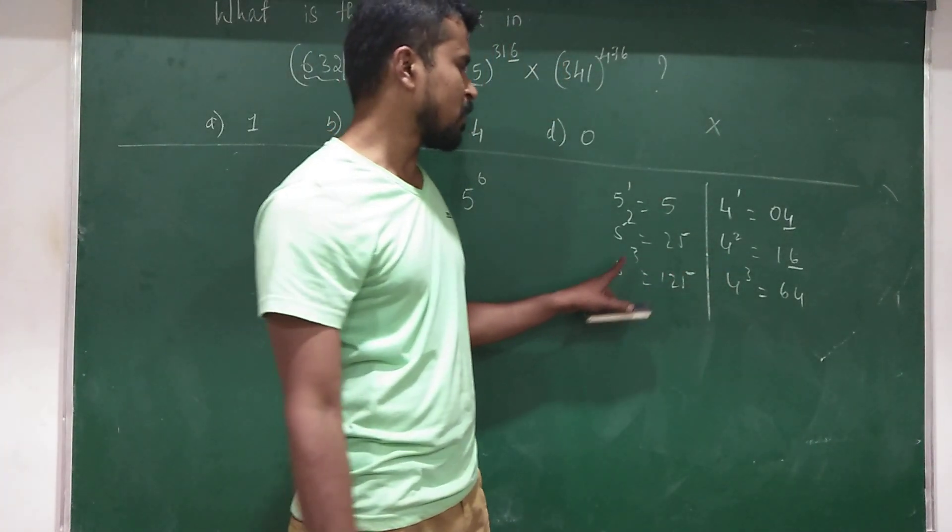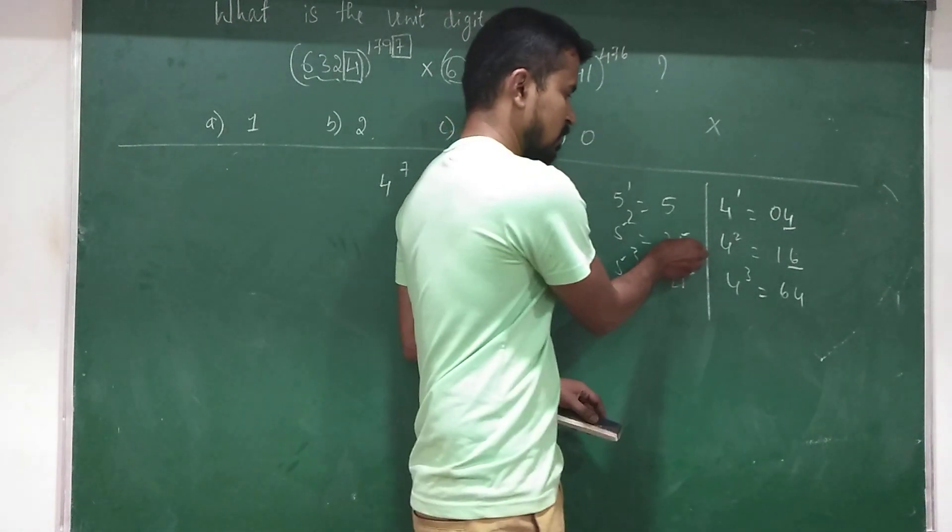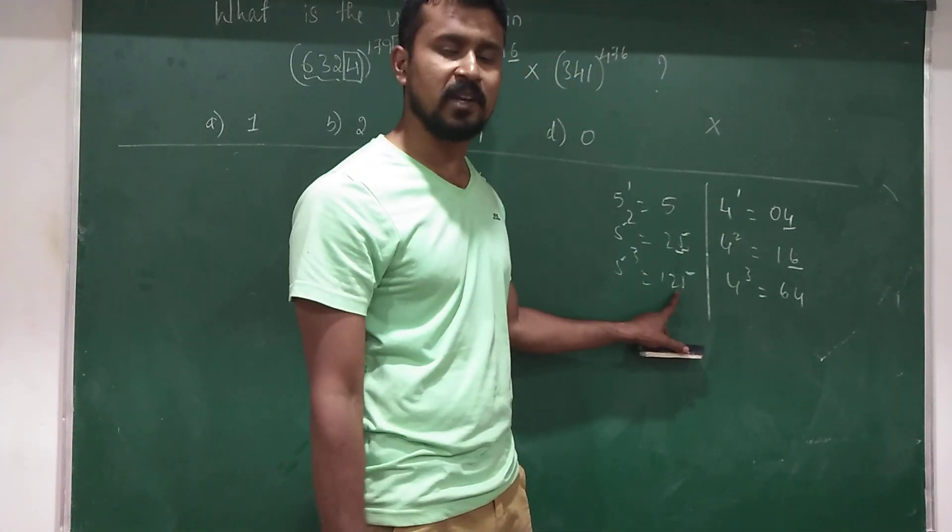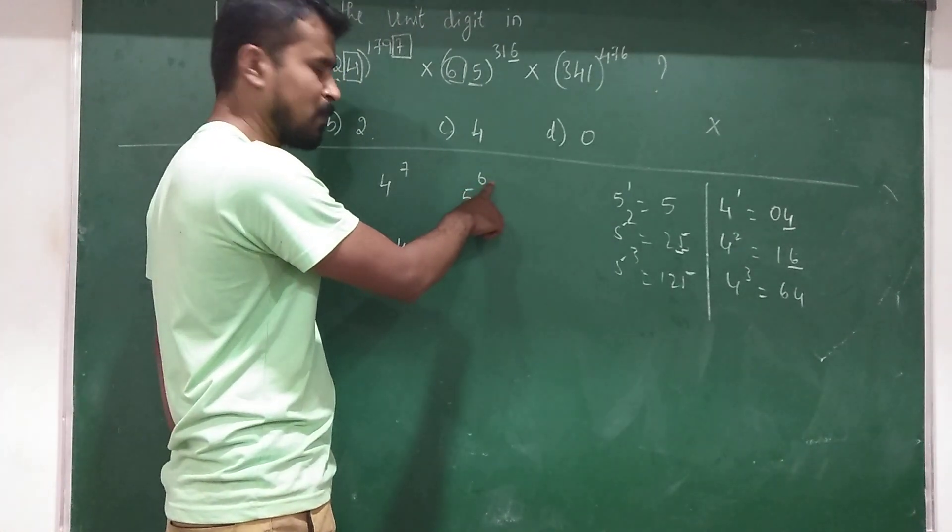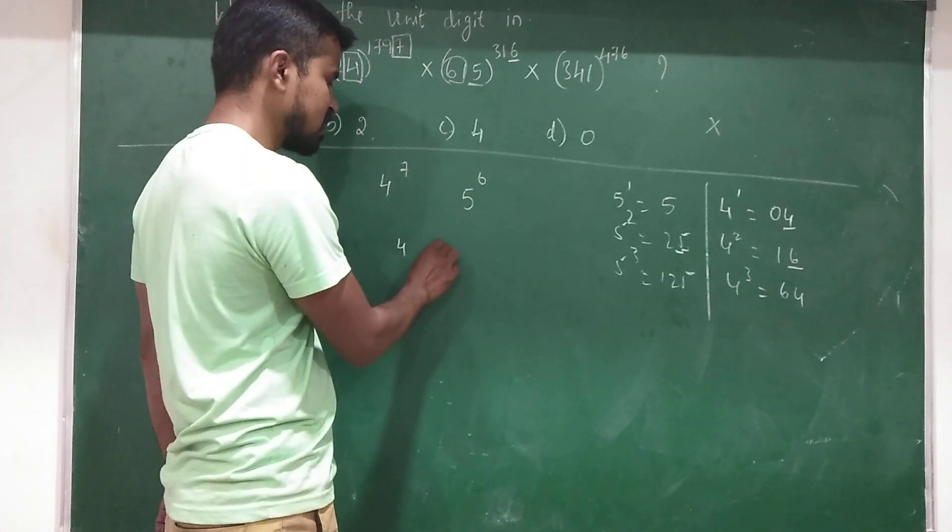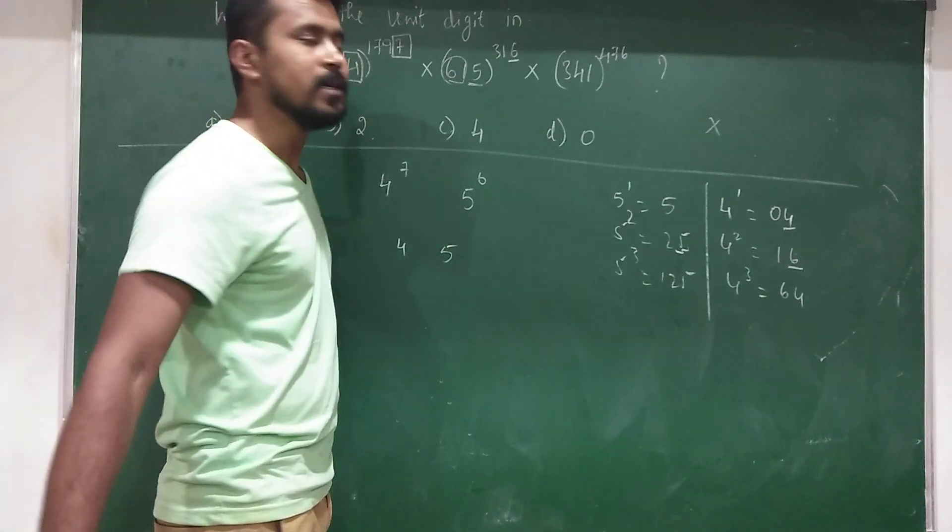So that means 5 to the power of any number, the resultant answer's unit digit will always be 5. That means 5 to the power of 6, when you multiply that, the unit digit will be 5.